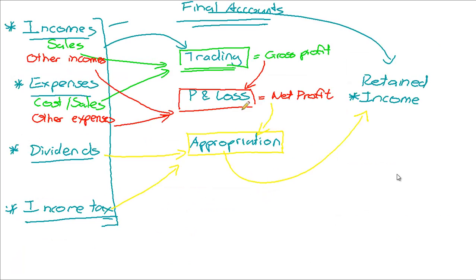Just a final note on the final accounts: all three of these accounts are intermediary accounts. What that means is they are not going to be classified as income, expenses, assets or liabilities, because they are simply used as accounts where money comes in and money goes out again. Money comes in and money goes out again, and finally money goes out to the retained income. So at the end of the day, the balance on these accounts is going to be zero — the debit side is going to equal the credit side, and there will be no balance left on these final accounts.